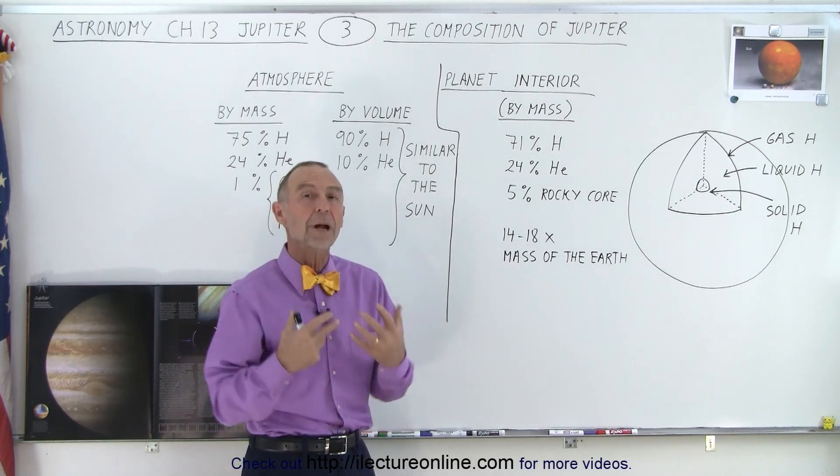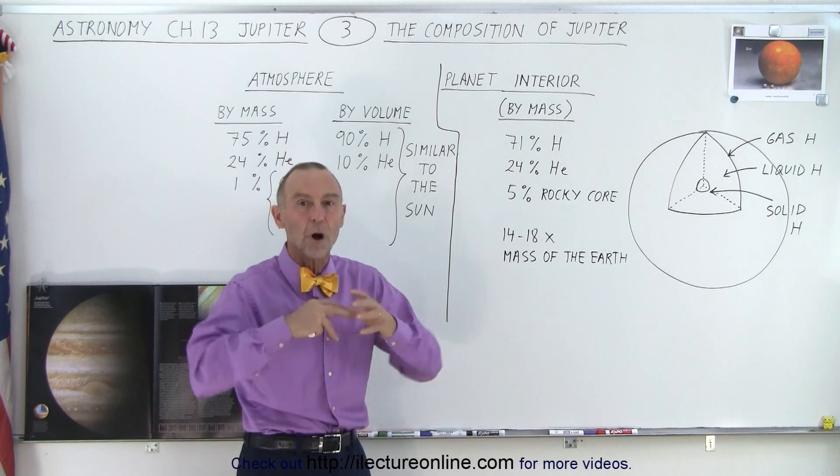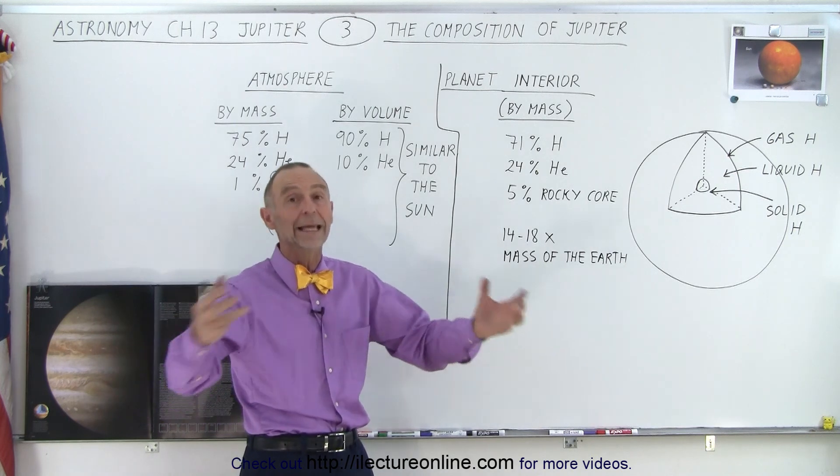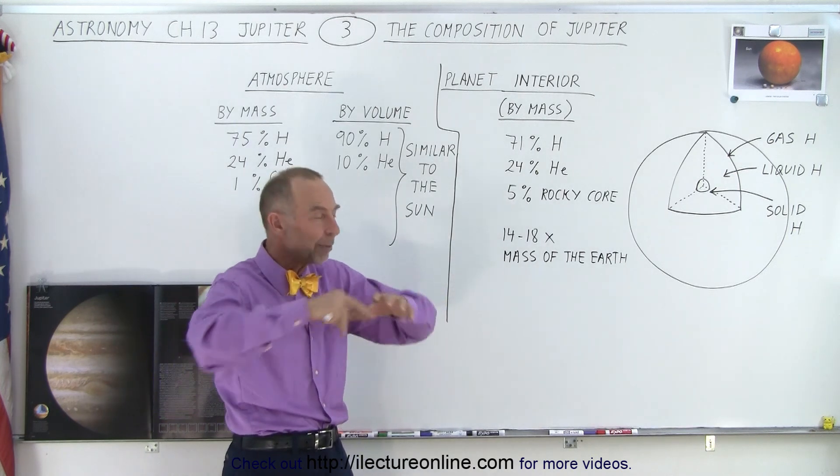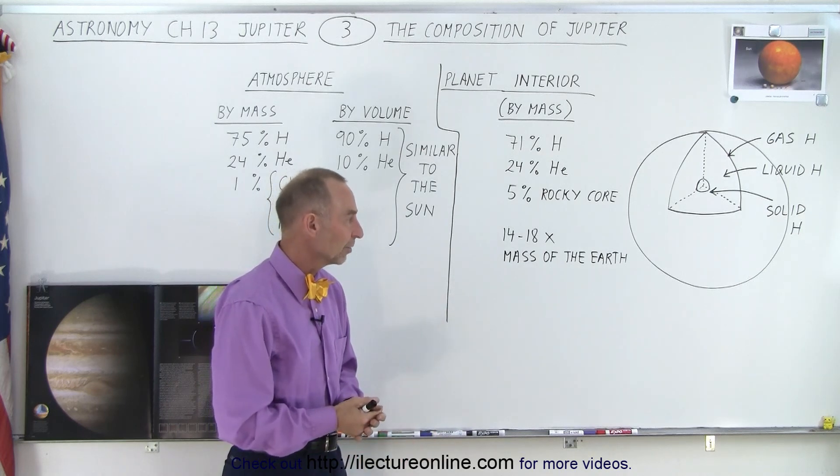We believe now that probably Jupiter started out as a rocky core planet and then started accumulating a bunch of gas on top of it, making it as big as it is.